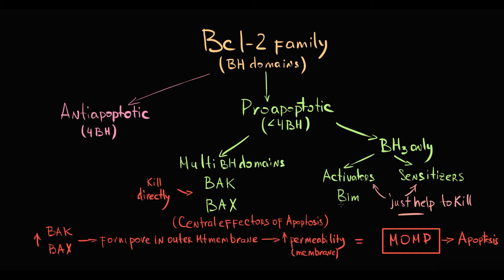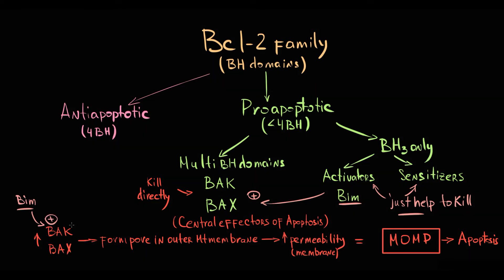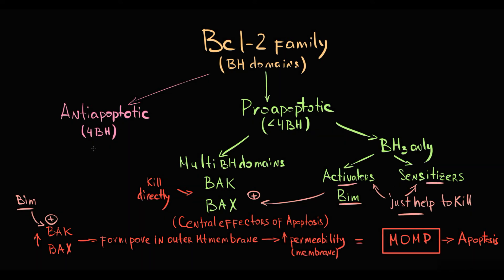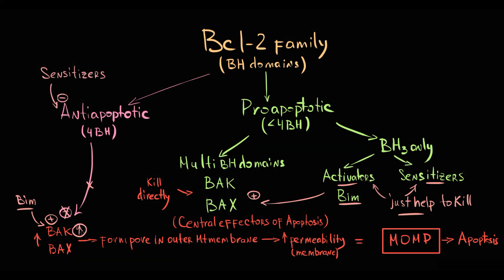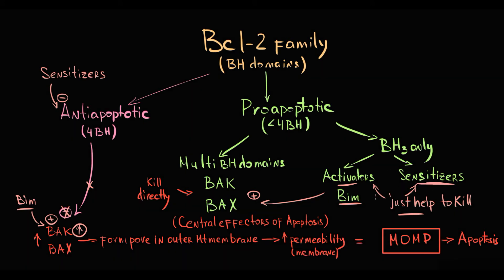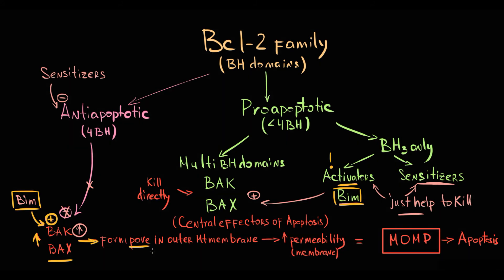BH3-only proteins can either bind to multi-domain proteins and by this binding activate them — directly stimulating them to kill mitochondria — and because of that such proteins are called activators. Or they can help indirectly by inactivating anti-apoptotic proteins. Once they neutralize the inhibitors of BAX and BAK proteins, the activity of multi-domain pro-apoptotic proteins tremendously increases. This is their indirect stimulation, and this group is called sensitizers. BIM protein belongs to the activators group, so once BIM activity increases, it stimulates multi-domain BAX and BAK proteins, which form pores in the outer mitochondrial membrane, inducing mitochondrial outer membrane permeabilization.